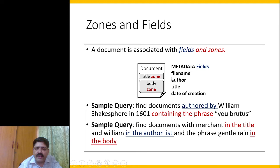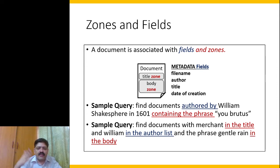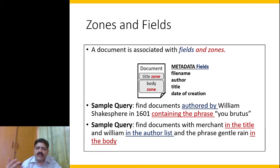Fields include things like file name, author, and date of creation. In some cases, the title of the document may also be taken as a field if it is short enough, so there is a choice whether to classify it as a zone or a field. Usually, if something can be indexed and searched it is a zone, but if the field is numeric or fits into a range, we call it a field.